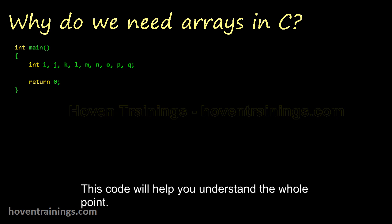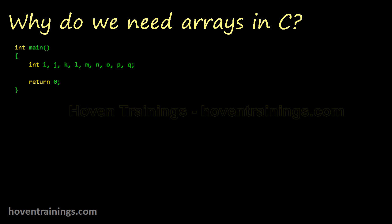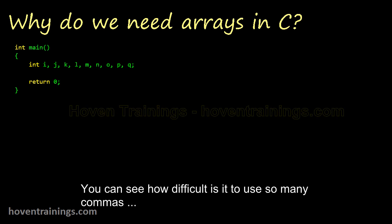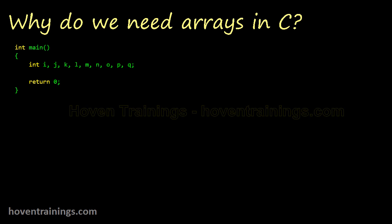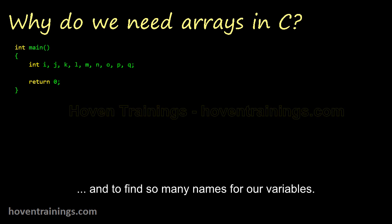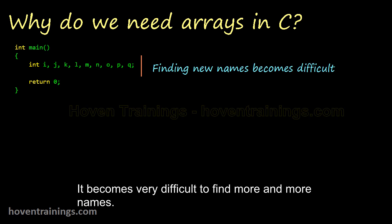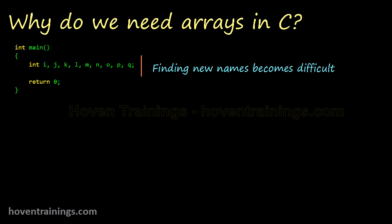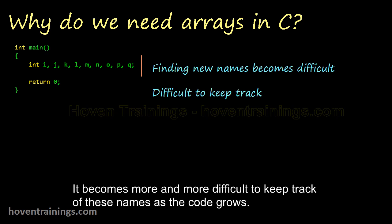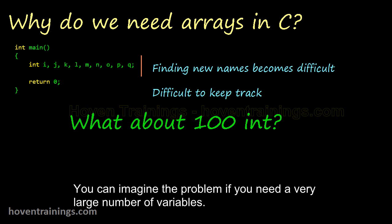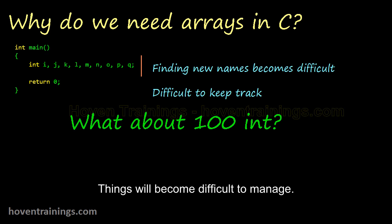This code will help you understand the whole point. Here I have created nine int variables. You can see how difficult it is to use so many commas and to find so many names for our variables. It becomes very difficult to find more and more names and to keep track of them as the code grows. You can imagine the problem if you need a very large number of variables — things will become difficult to manage.